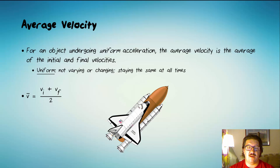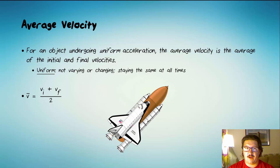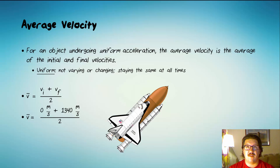For the example of the space shuttle, we can write the equation v̄ = (vi + vf) / 2 — literally the average of two numbers, just like you average a test. Note this equation is not on your reference table, but it is a valid equation and very helpful at times. Plugging in 0 meters per second and 1,340 meters per second, divided by 2, we find the average velocity of the shuttle was 670 meters per second. It's as simple as that.